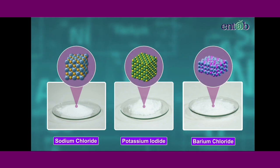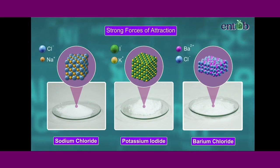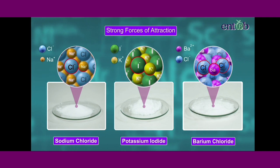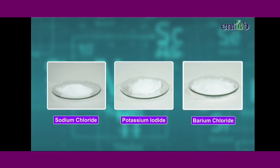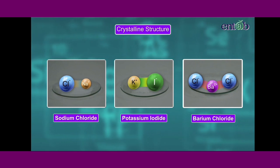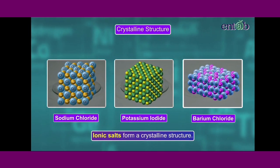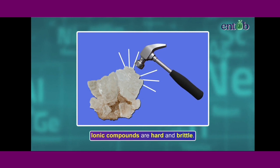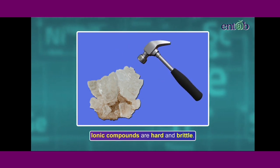It is because of the strong forces of attraction between the two oppositely charged ions present in the molecule. These ions strongly attract each other and form a regular crystalline solid. These crystals of ionic compounds are generally hard and brittle.